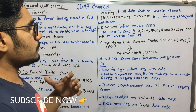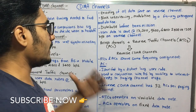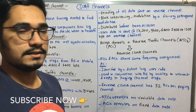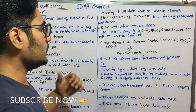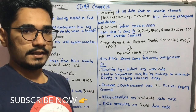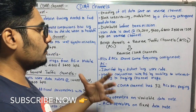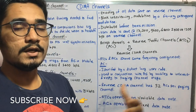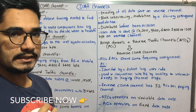The reverse CDMA channel is comprised of two channels: the access channel (AC) and the reverse traffic channel (RTC). The RTCs and ACs on the same CDMA channel share the same frequency assignment, so no separate or specific frequency assignment is needed for these two channels.